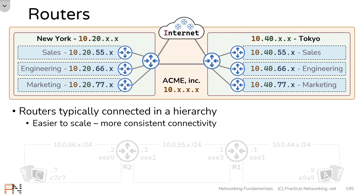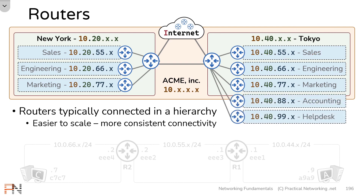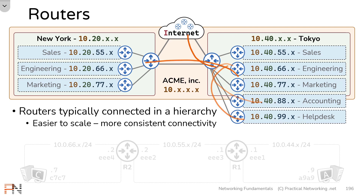Let's say the Tokyo network decides to expand and add two more networks: the accounting network and the helpdesk network. In each case a router is stood up to handle the traffic for each of those networks and that router is simply connected once into some sort of aggregation router, and instantly both of these networks now have connectivity into the rest of the topology of the Acme network. Hopefully this can show you that a network design where routers are deployed in a hierarchy is much easier to scale.